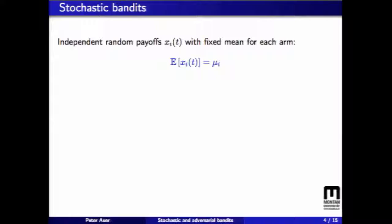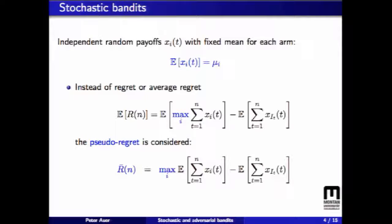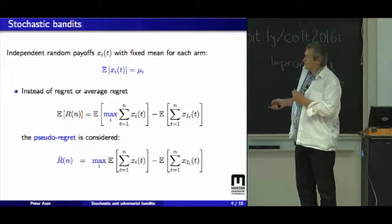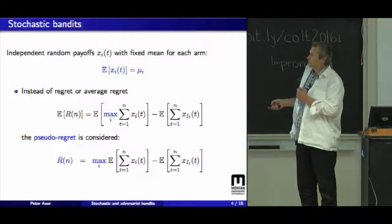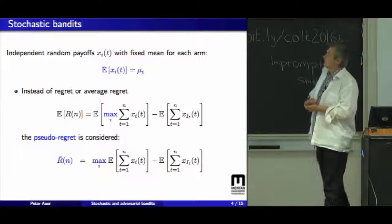In the stochastic setting, we have independent payoffs. For each arm, we have mean. And instead of looking directly at the regret, we look at the pseudo-regret, because the regret or the expected regret typically scales like square root n. And to get more interesting bounds, we look at the pseudo-regret, which always seems more fair, because even if the arms are all equal, then the expectation of the max is square root n larger than the actual mean. So comparing the average reward or average payoff of the algorithm with the average payoff of the optimal arm is the fair thing to do.